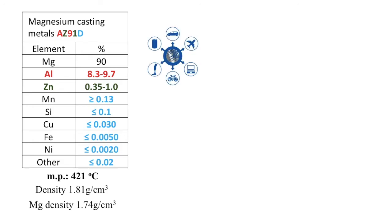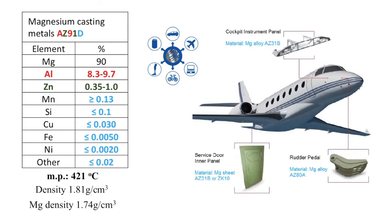Die casting magnesium alloy parts outperform plastic because they are stronger and have a higher temperature application, since the highest melting point for any thermoplastic is 327 degrees Celsius. This makes magnesium alloys useful especially in transportation, because they reduce the weight and therefore improve efficiency. Ultimately, using magnesium instead of plastics is less expensive because the products are stronger.